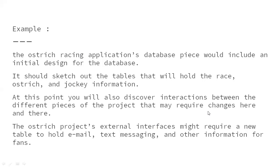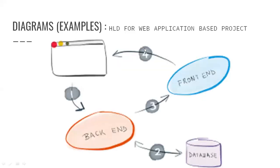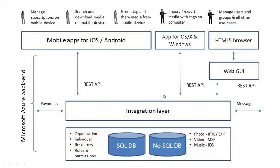Now for diagrammatic examples — this diagram is for HLD, which is a high-level design for a web application-based project. What do we need exactly: front-end and back-end? So this is a kind of HLD — consider it in the case of Microsoft Azure. Microsoft Azure is the backend layer, with API, web UI, then SQL DB or NoSQL DB.